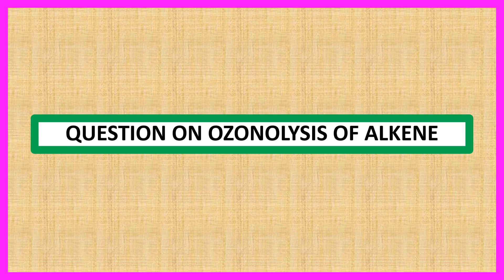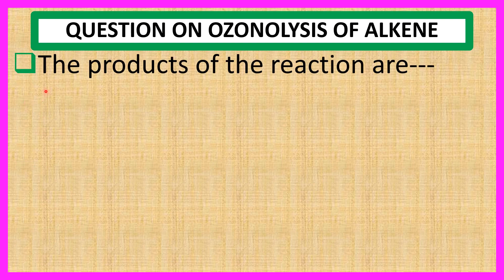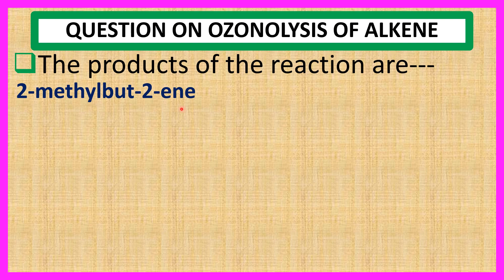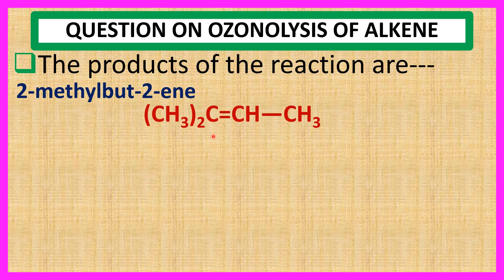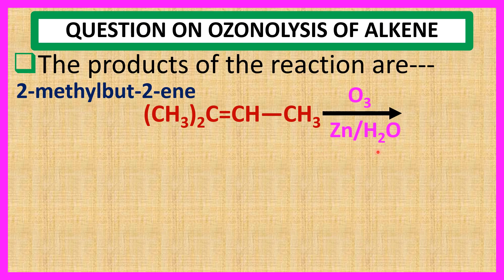Welcome everyone. Question on ozonolysis of an alkene. The products of the reaction are, when 2-methylbutene — this compound — first reacts with ozone and then reacts with Zn/H2O, what are the products?